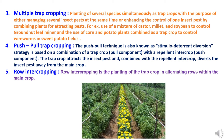Fourth is push-pull trap cropping. The push-pull technique is also known as stimulo-deterrent diversion. This strategy is based on a combination of a trap crop (pull component) with a repellent intercrop (push component). The trap crop attracts the insect pest, and combined with the repellent intercrop, diverts the insect pest away from the main field.